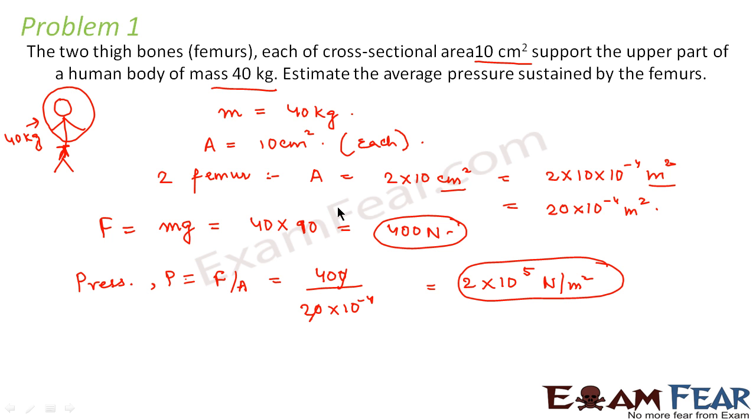So in this case, what did we do? We just applied the formula: pressure is force per unit area. What would be the force in this case? It would be nothing but the weight of the body, that is mg, which is acting vertically downwards. The area would be the total area of both the thigh bones, which was 2 into 10 to the power minus 4 meter square.